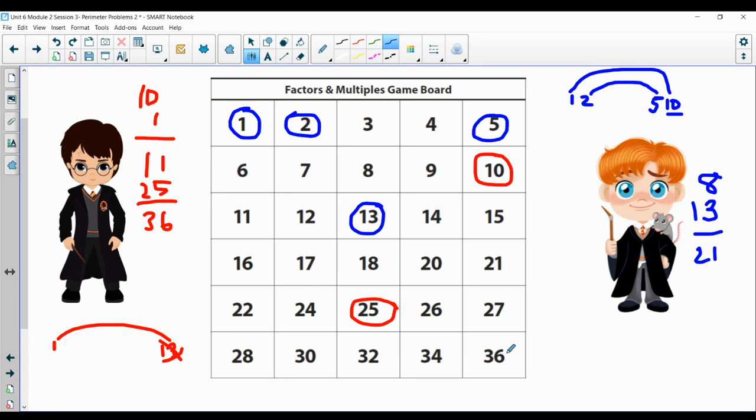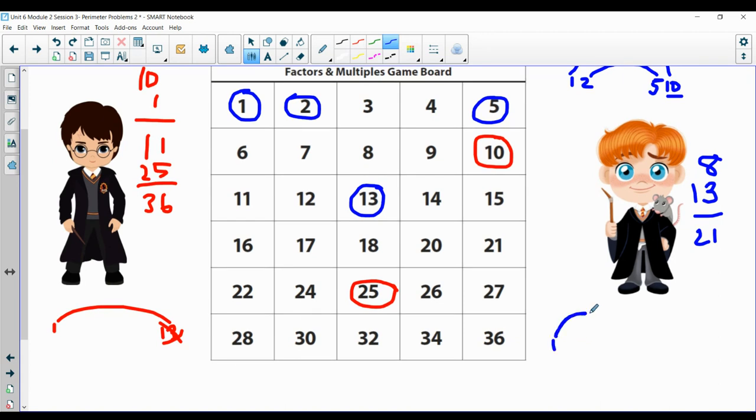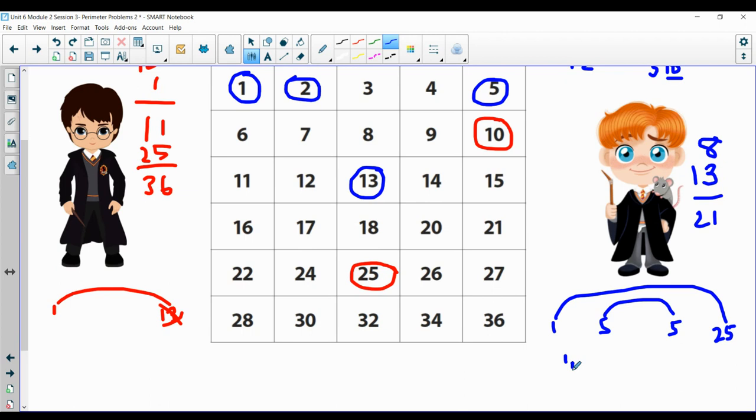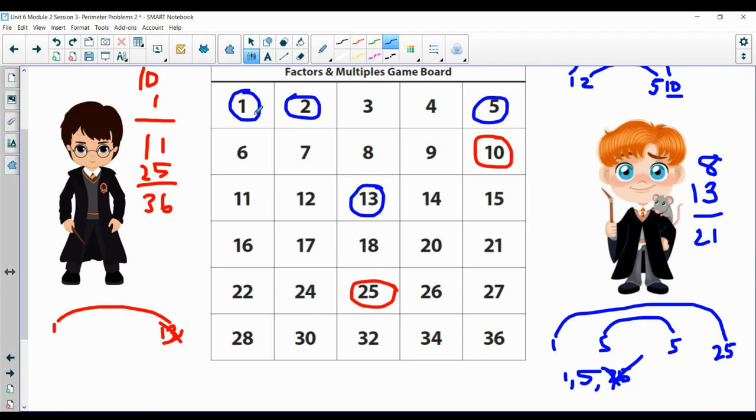So now Ron's got to do his rainbows. 1, 25. 2, nope, because it's not an even number. 3, 4, nope. 5 times 5. So all really he has is 1, 5, 25. However, that 25 is already taken by Harry. So he can do the 1 and the 5. The 1's already taken and the 5's already taken. So he has no points. Poor Ron.